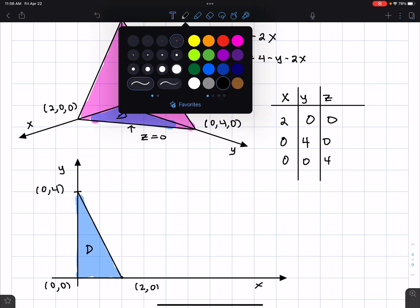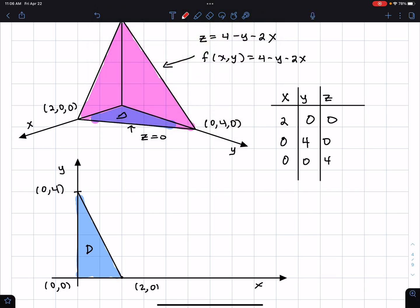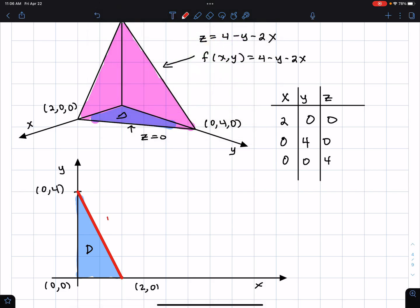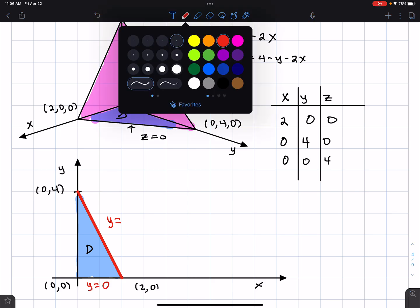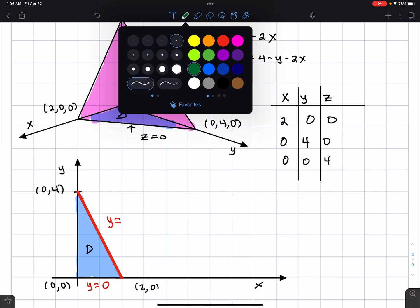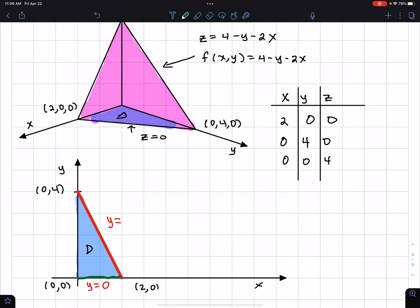Now, this is what they call a type 1 region. Type 1 region means that I have a region that's bounded above by y as a function of x and bounded below by y as a function of x. So below is already sort of easy enough. That's y equals 0. But what is that? So I have bounded below and above. What is the function above that I've indicated by this red line?